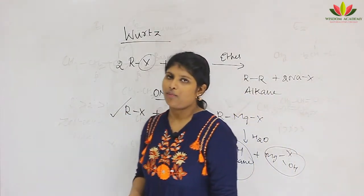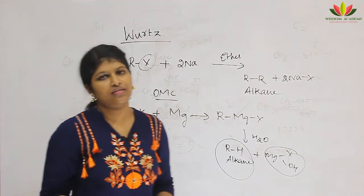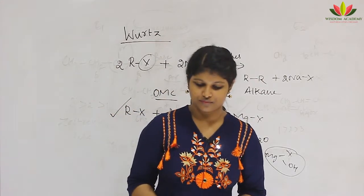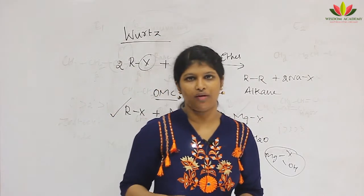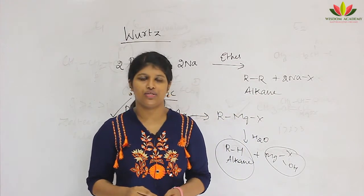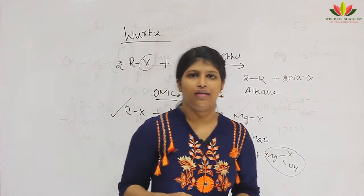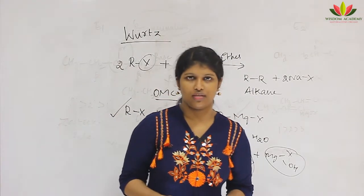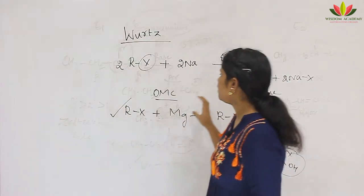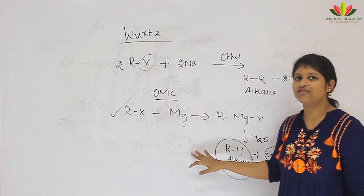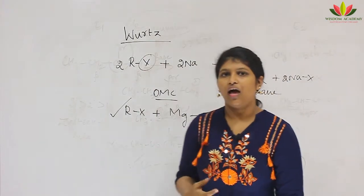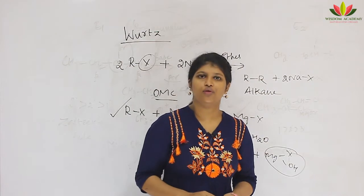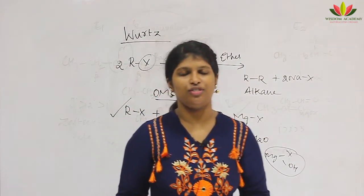So in this session we have seen physical properties and chemical properties with mechanism — chirality, nucleophilic substitution reactions, and elimination reactions. In the coming session we will see the chemical properties of haloarenes, as well as uses and useful compounds like CFCs. The mechanism for aryl groups is somewhat different from alkyl groups due to the benzene ring, and we will cover that in the next class. Thank you — please subscribe to our channel, like the video, and share with your friends.